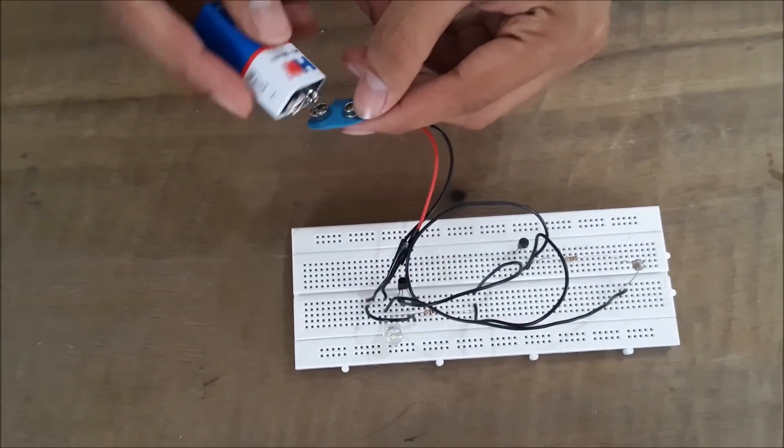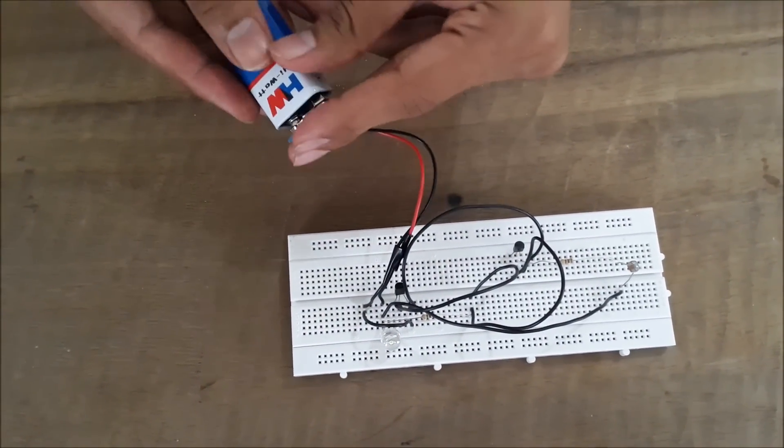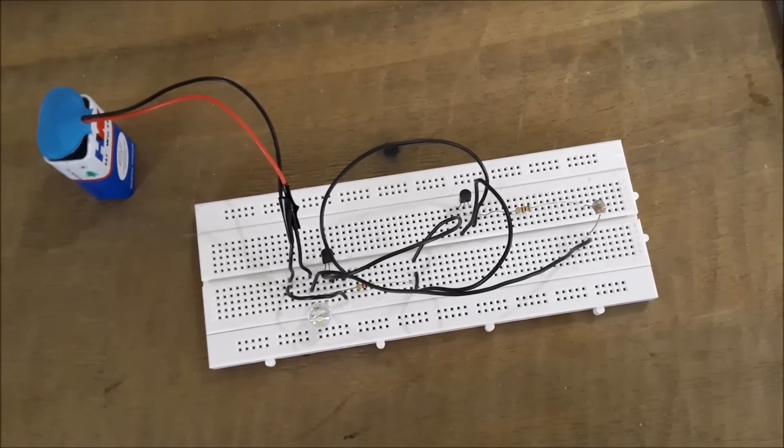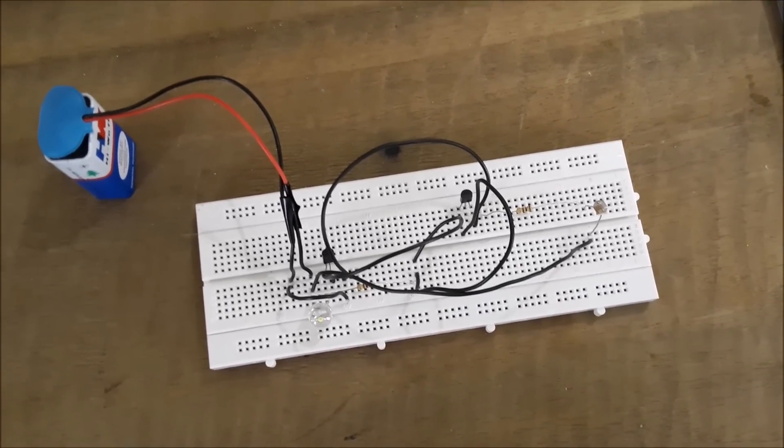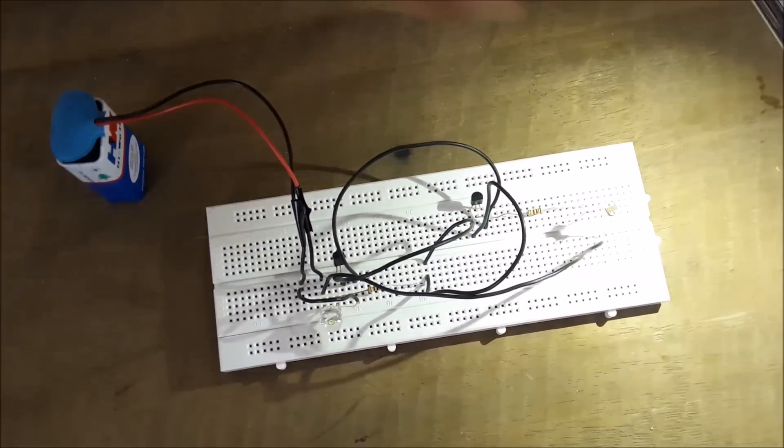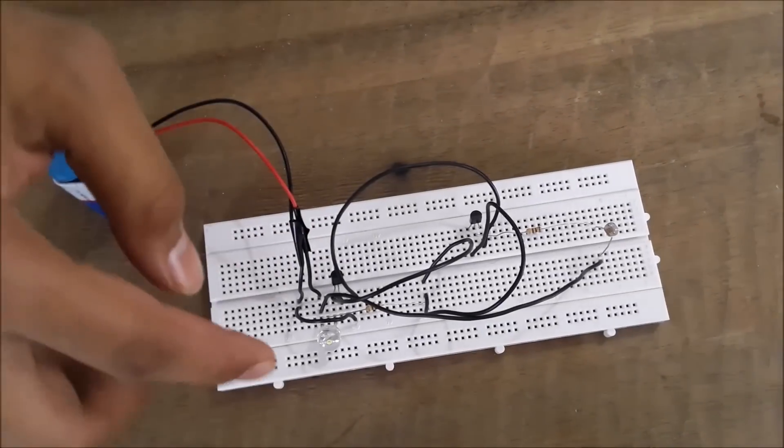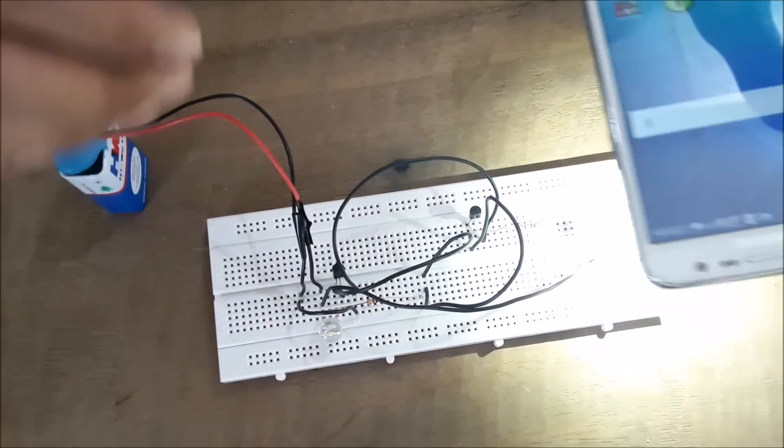Now I am applying external light source to see if the circuit is working or not. Here is the external light source. You can see here is the LED. As the light source is on the LDR, the LED is not lighting.